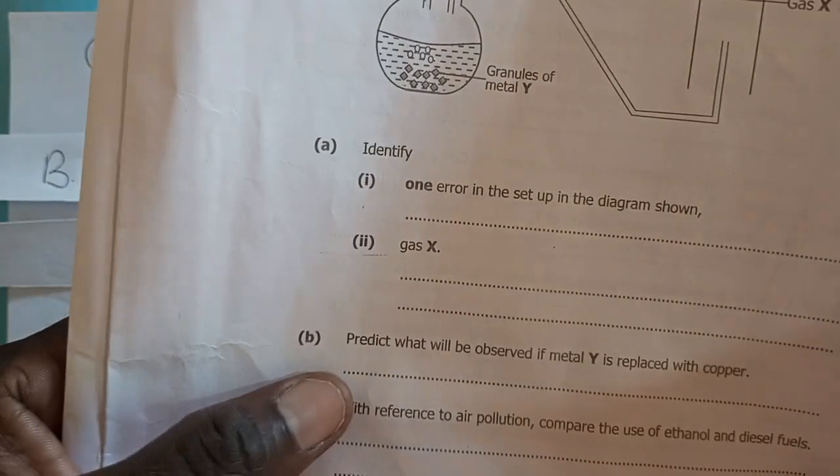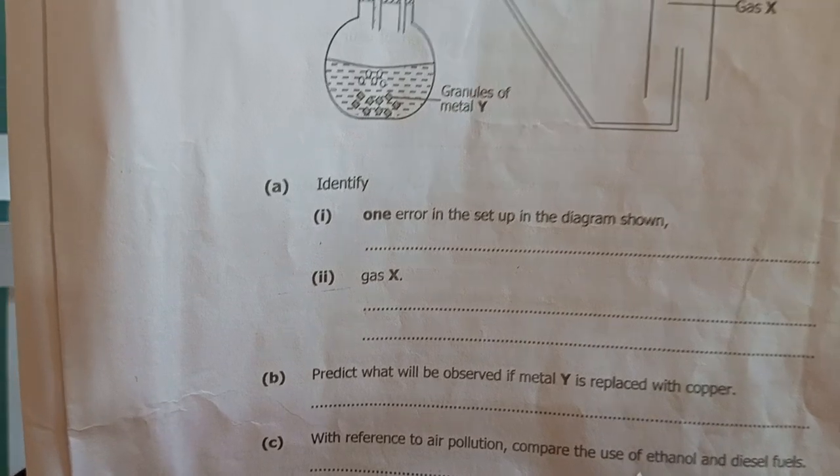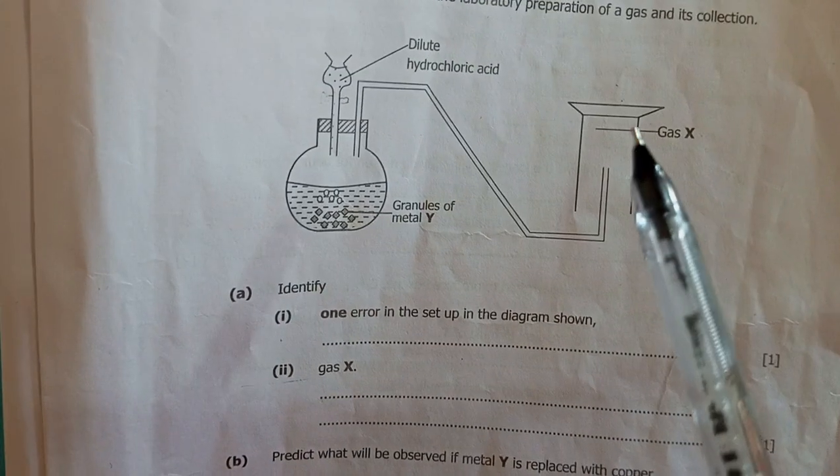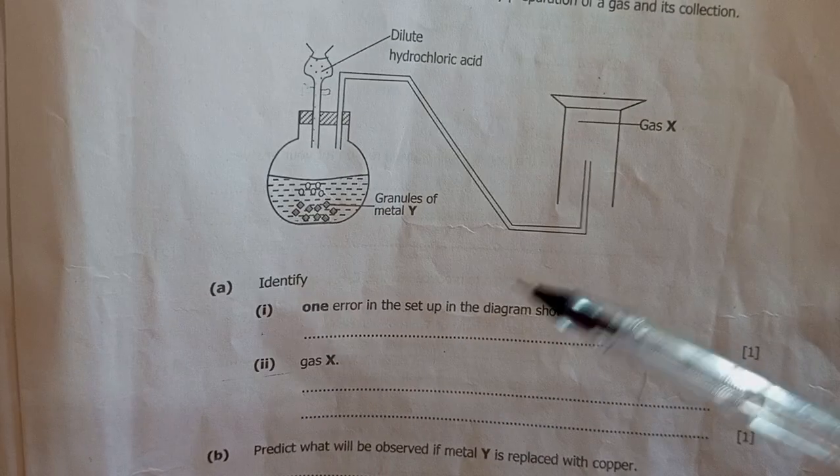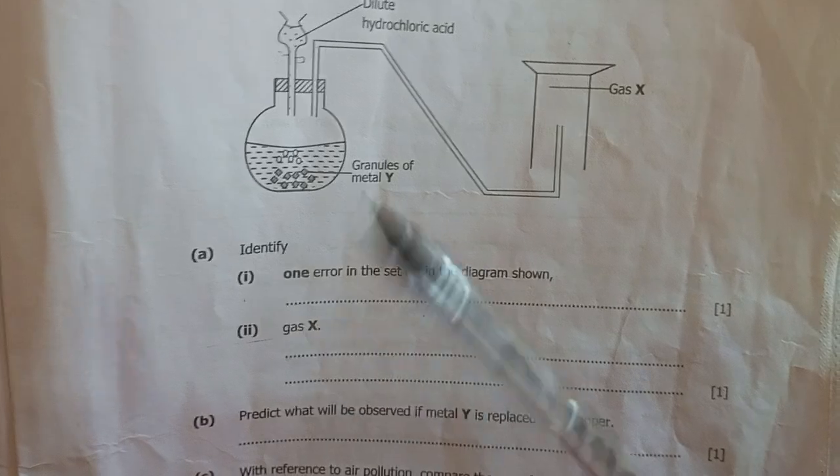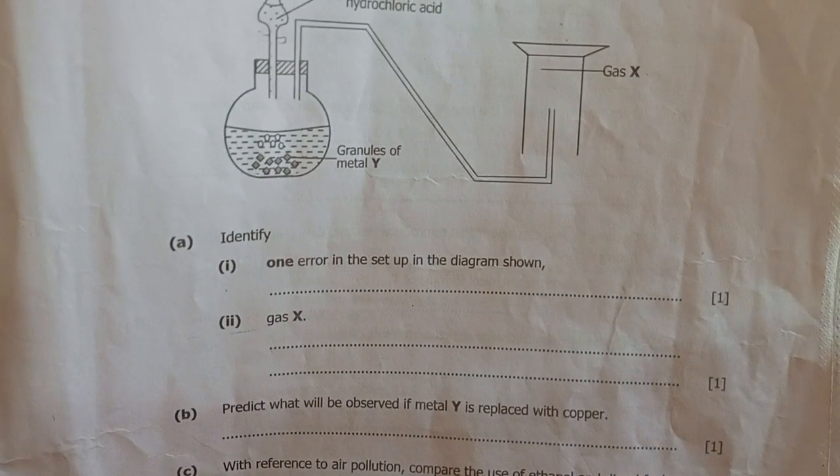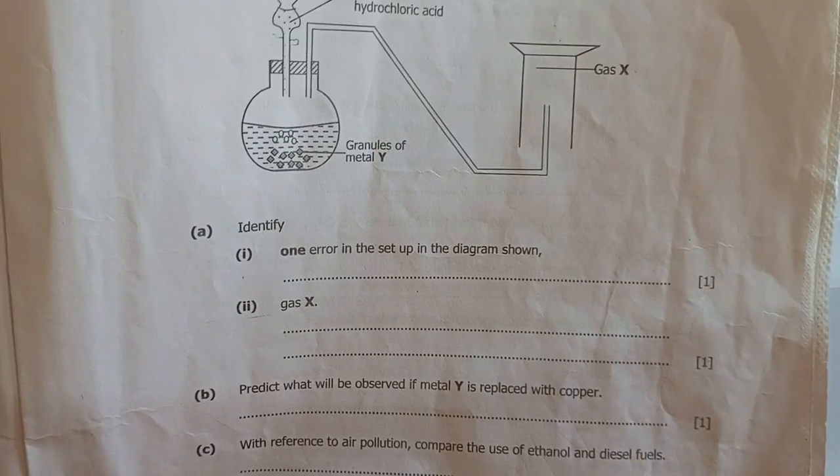We proceed to predict what would be observed if metal Y is replaced with copper. So for you to produce this gas, this metal must be reactive. Now on the reactivity series, copper is below hydrogen, so it doesn't even react with a dilute acid, preferably hydrochloric acid.